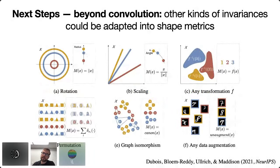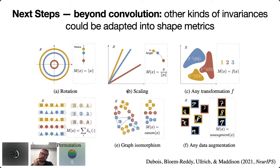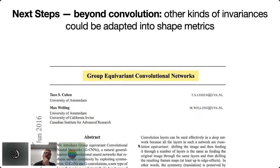There are many other groups in deep learning converging on similar ideas, building mathematical theories of task-invariant neural representations. Translation invariance is the simplest example, but there are many other kinds of task-invariant transformations and inductive biases being put into neural networks, and we can turn those into complementary shape metrics. I'll point to a paper by Taco Cohen and Max Welling, one of the first papers kicking off this line of theoretical research in the deep learning community.